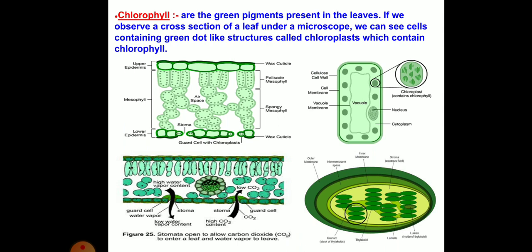Chlorophylls are the green pigments present in the leaves. If we observe a cross-section of a leaf under a microscope, we can see cells containing green dot-like structures called chloroplasts, which contain the chlorophyll. In the diagram, you can see guard cells with chloroplasts. From the stomata — small openings — carbon dioxide as well as oxygen move inside and outside the leaves or cells.